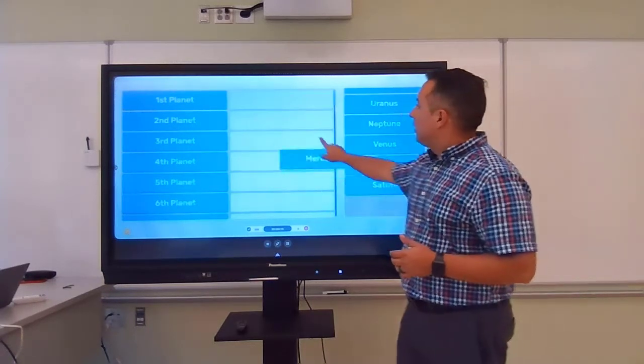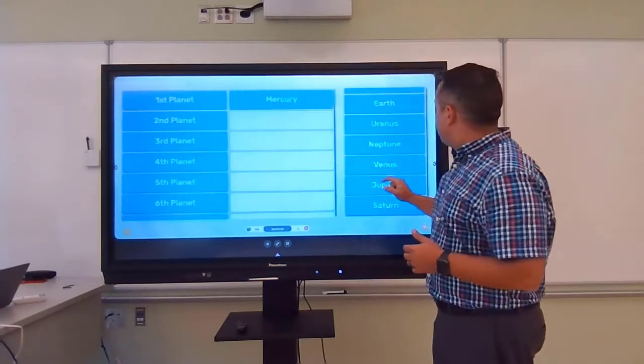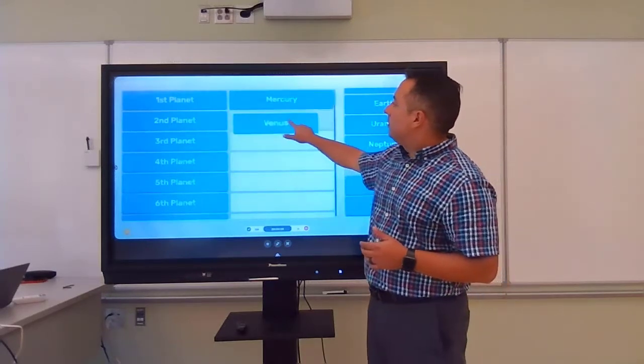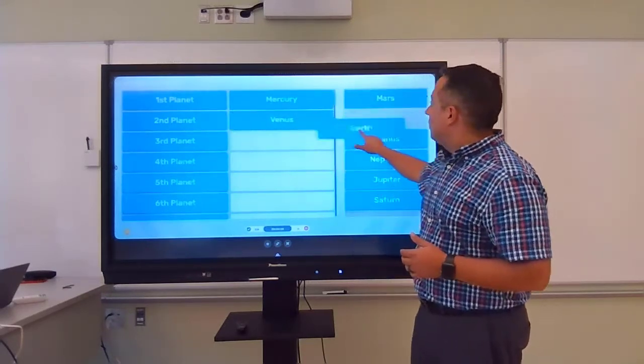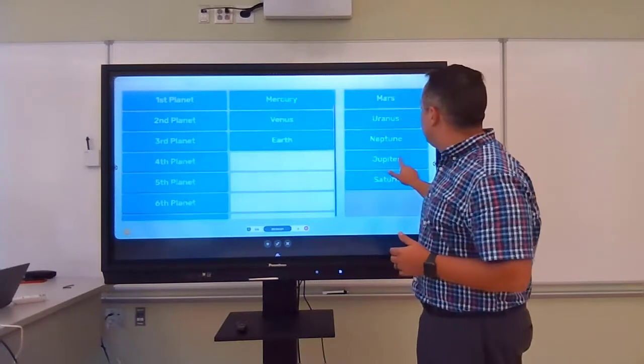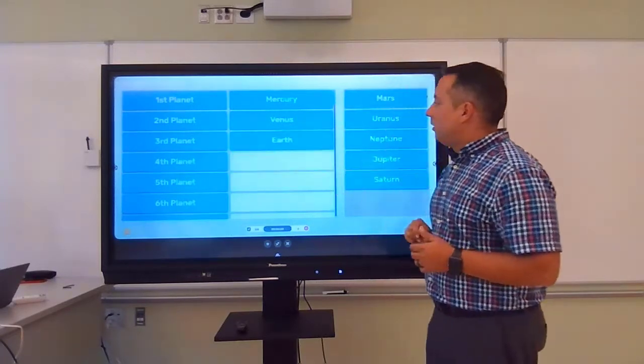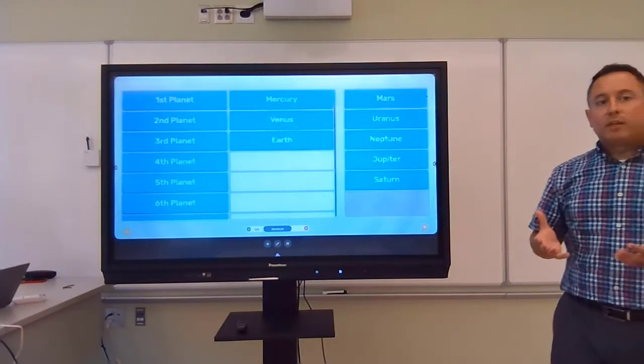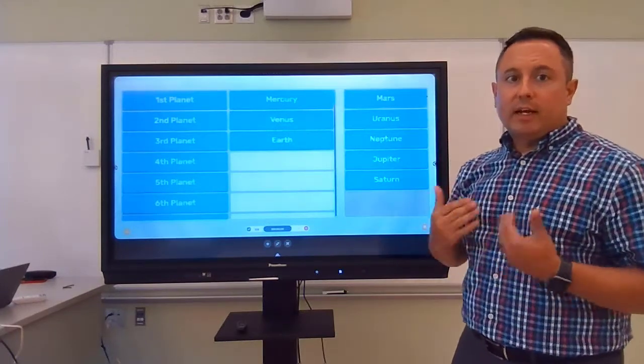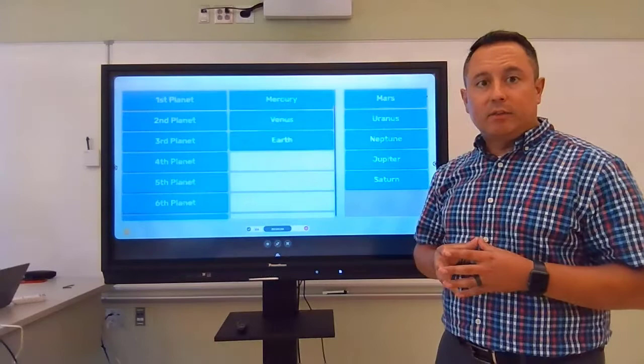So my first planet is down here, Mercury. Second planet is Venus. Third planet is Earth. If I make a mistake and I choose the wrong one for the fourth planet or any of the planets, it's going to slide them back there like that. So that's a really simple matching activity that I just created in Active Inspire.